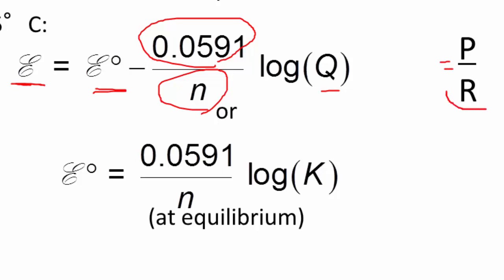A couple things to consider: if we increase the reactants, that shifts the reaction to the right and increases voltage. If we decrease the products, that also shifts it to the right and increases the voltage. Another way to look at it is mathematically. For example, if the products over reactants equals 10, you take log of 10, and that's 1. Notice this is a subtraction sign, so any number greater than 1 — when you take the log — gives a positive value, and when you subtract that, it decreases your voltage. On the other hand, if you have a number smaller than 1, say 1 over 10 which is 0.1, log of 0.1 is negative 1, and minus a negative 1 means you're increasing the voltage. So any time you have a log of a number smaller than 1, it increases your voltage; any time you have a log of a number greater than 1, it decreases your voltage. That's the Nernst equation.